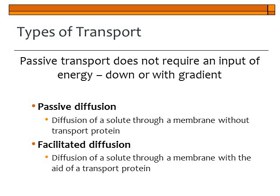Another type of passive transport is facilitated diffusion. In facilitated diffusion, solutes still move down their concentration gradient — from high to low concentration — but they have to move through a transport protein embedded in the membrane. These solutes are usually bigger or have some type of charge, so they can't just go through passive diffusion.